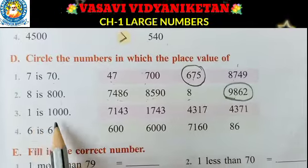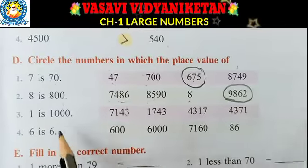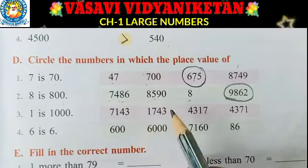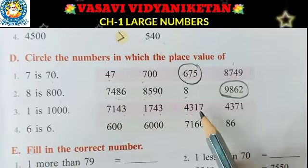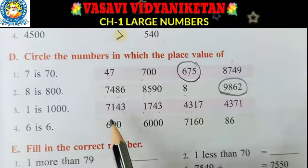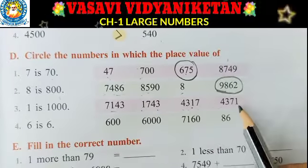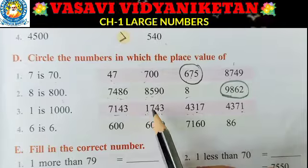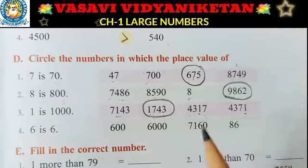Next, 1 is 1,000 Nana — so 1 is in the 1,000's place. The numbers given are 7,143, 1,743, 4,370, and 4,371. Here 1 is in the 100's place, here in the 10's place, here in the 1's place, and here 1 is in the 1,000's place. So 1,743 is the correct answer.